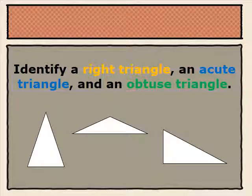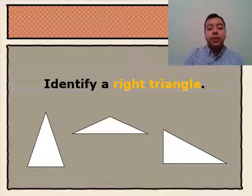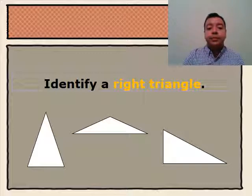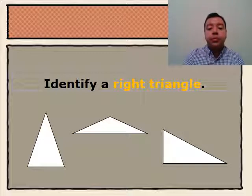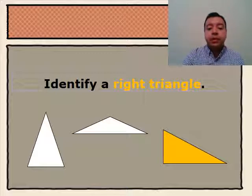Next we'll be identifying right triangles, acute triangles, and obtuse triangles. First we'll be identifying a right triangle. From the triangles below, we see that the right triangle is the third one. We know that this is a right triangle because one of its angles is a right angle.